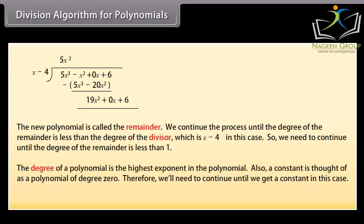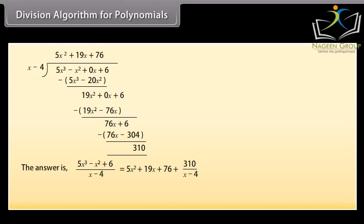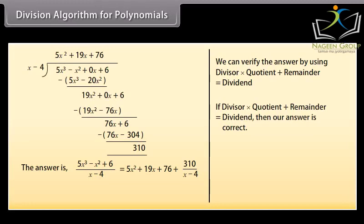The degree of a polynomial is the highest exponent in the polynomial. A constant is thought of as a polynomial of degree 0. Therefore, we continue until we get a constant in this case. The answer is: 5x cube minus x square plus 6 whole upon x minus 4 equals 5x square plus 19x plus 76 plus 310 whole upon x minus 4. We can verify the answer: if divisor times quotient plus remainder equals dividend, then our answer is correct.